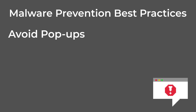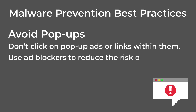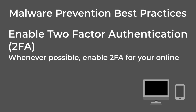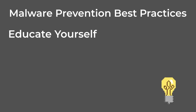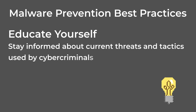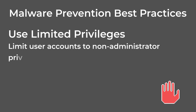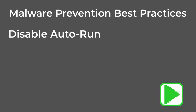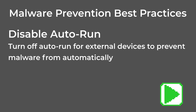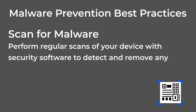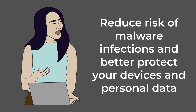Avoid clicking on pop-ups — don't click on pop-up ads or links within them; use ad blockers to reduce the risk of encountering malicious ads. Enable two-factor authentication (2FA) — whenever possible, enable 2FA for your online accounts to add an extra layer of security. Educate yourself — stay informed about current threats and tactics used by cybercriminals and educate yourself on how to identify potential risks. Use limited privileges — limit user accounts to non-administrative privileges to reduce the potential impact of malware. Disable auto-run — turn off auto-run for external devices to prevent malware from automatically executing when plugged in. Regularly scan for malware — perform regular scans of your device with security software to detect and remove any potential threats. Now that you know the signs of these various types of malware, you'll be able to better defend your device. By following these practices, you can significantly reduce the risk of malware infections and better protect your devices and personal data.